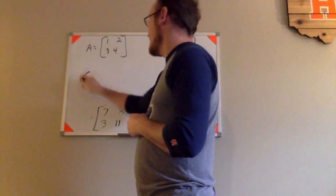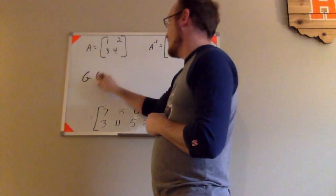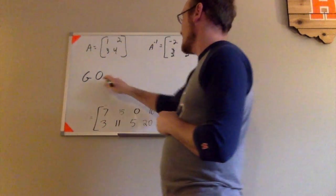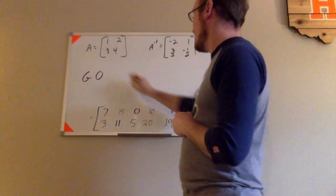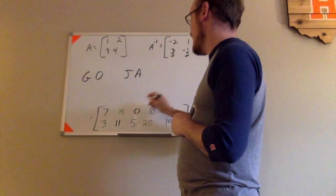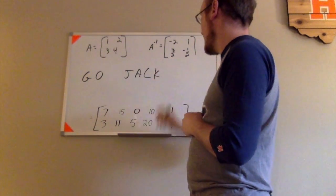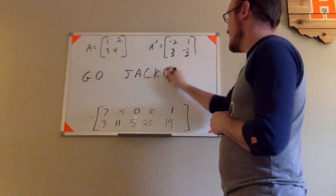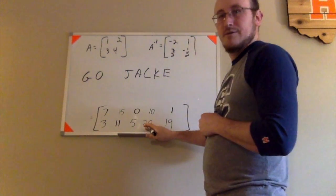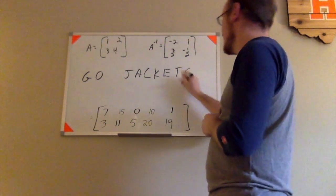If I go ahead and convert those back to the letters of the alphabet, the 7th letter of the alphabet is G. The 15th letter of the alphabet is O. 0 represents a space. The 10th letter of the alphabet is J. The 1st letter is A. The 3rd letter is C. The 11th letter is K. The 5th letter is E. The 20th letter is T.